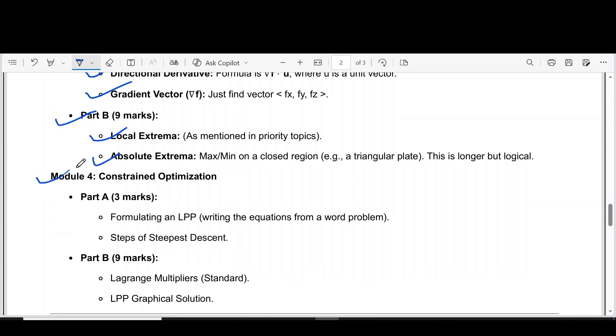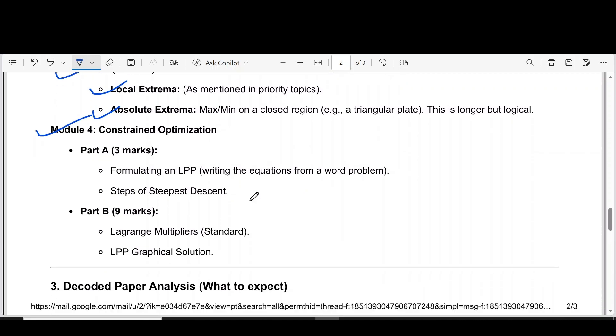Coming to module 4, constraint optimization. Part A question is formulating an LPP, writing the equation from a word problem. Then steps of steepest descent.